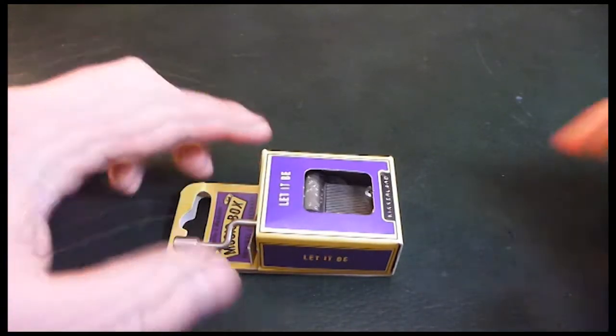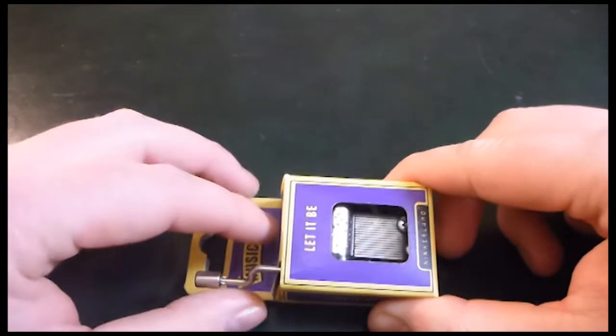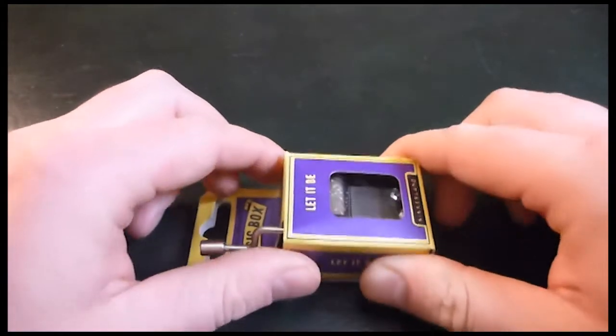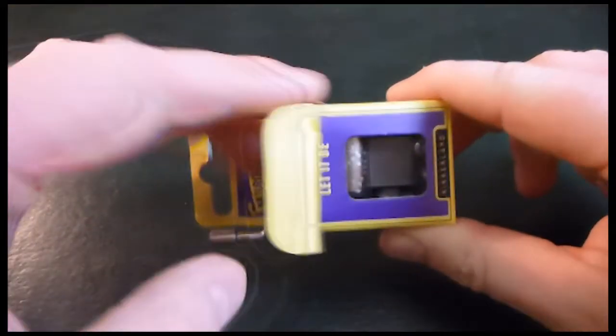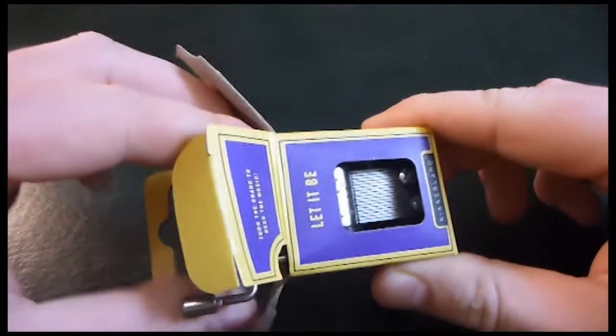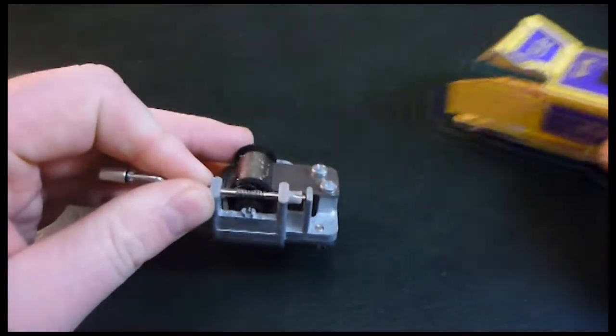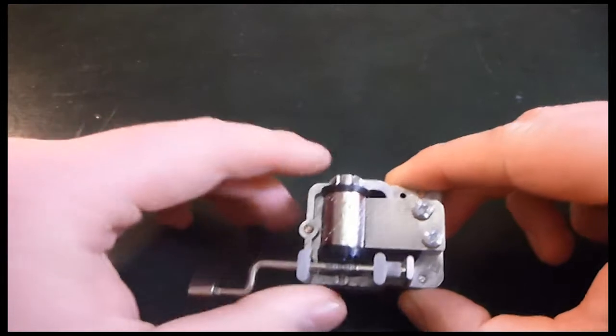This is called a music box. They come in a range of different brands and a range of different songs as well. This one's Let It Be by The Beatles. And I got this one in an exhibition in Seattle. It was a music exhibition and they had all different types of guitars and gizmos like this in the gift shop.